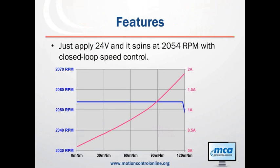Here's the torque curve measured with this motor. Since there's closed-loop speed control, it always spins at 2,054 RPM across the entire operating torque range. As motors age, bearings wear out, temperatures change, and dirt builds up, open-loop BLDCs will show a change in RPM, but closed-loop control gives you a known fixed RPM at all times.